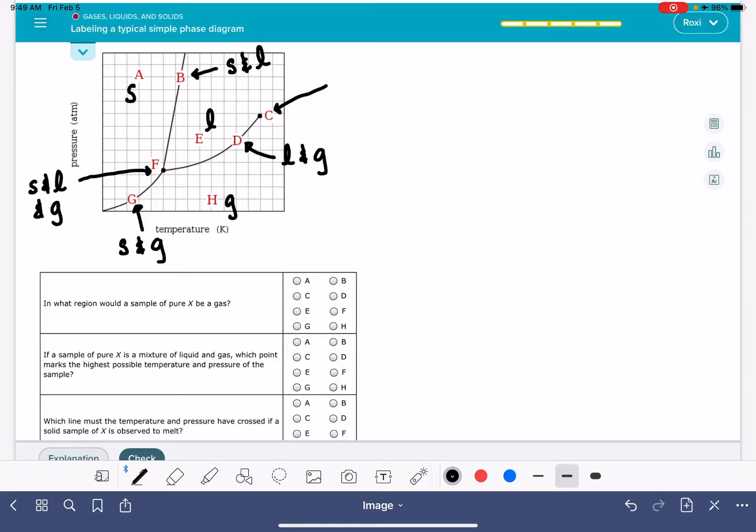And then last but not least, point C, this is what we call the critical temperature and the critical pressure. This is the highest pressure, highest temperature, where we can actually distinguish the liquid state from the gas state.